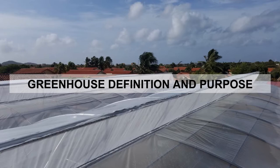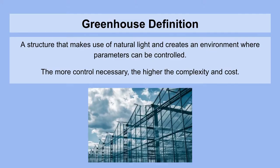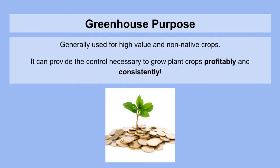Greenhouse definition and purpose. Greenhouses are essentially structures that make use of natural light and create an environment where parameters can be controlled. The more control you need, the higher the complexity of the components you'll be working with and their associated costs. They're generally used for high value and non-native crops that would normally have a hard time growing in a given environment. Greenhouses can provide the control necessary to grow plant crops profitably and consistently, allowing the farmer to maintain contracts year-round with their clients.